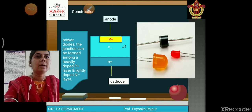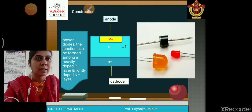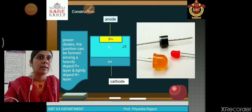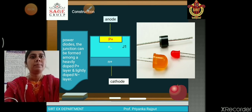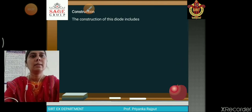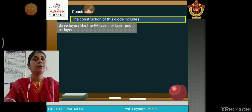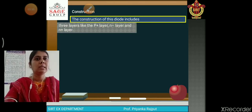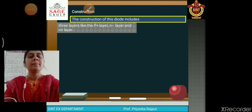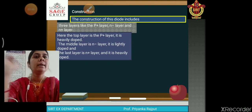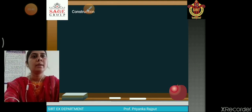You can see a silver color layer and a black layer. In the physical component, the silver color layer is the negative terminal and the rest of the silver color is the positive terminal. The construction of the diode includes three layers: P+, N+, and N-. The P+ layer is a heavily doped layer, the N- layer is a lightly doped layer, and the N+ layer is a heavily doped layer.